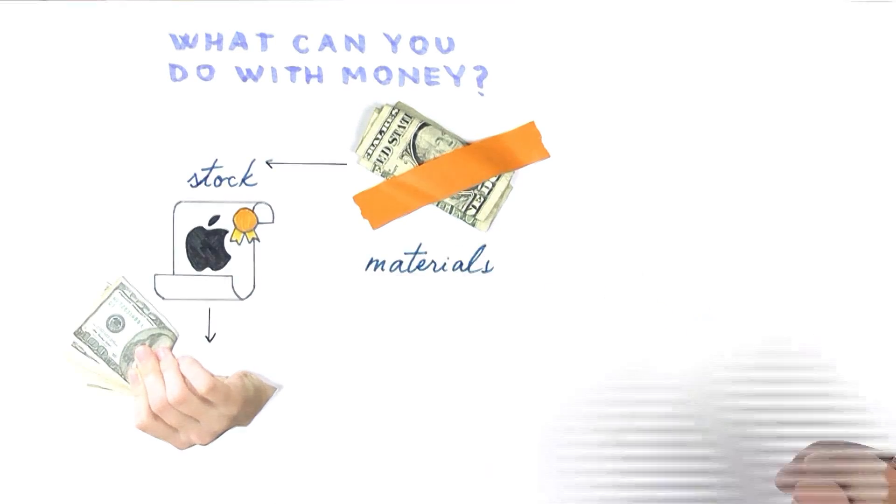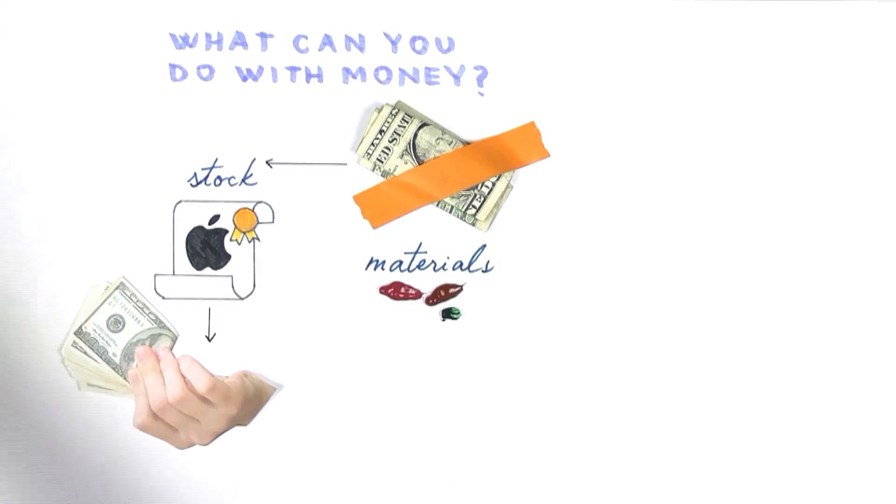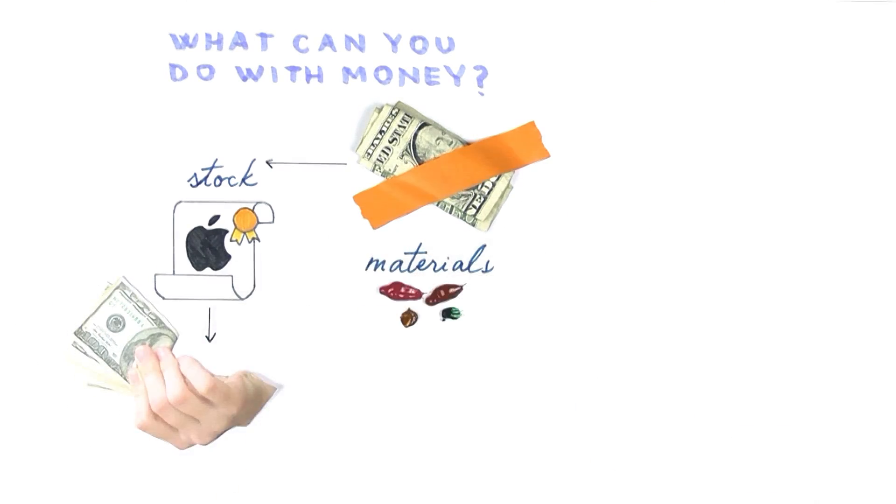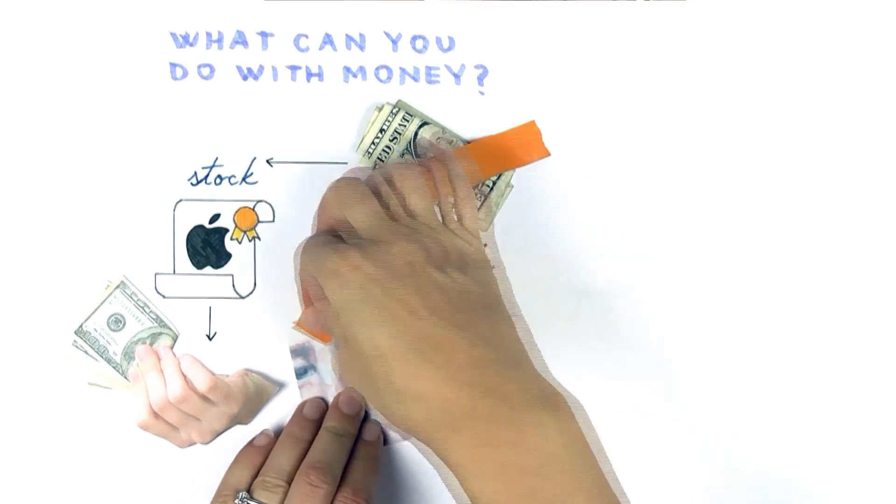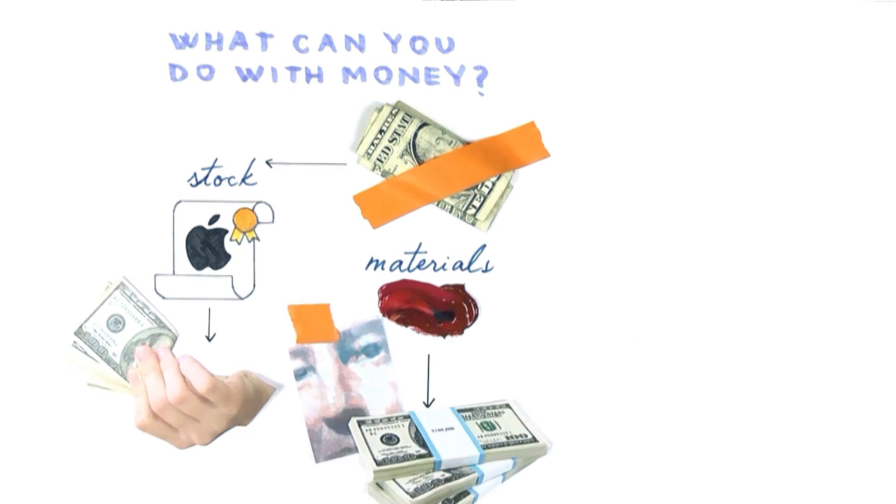You could also purchase raw materials that can be combined and transformed into something that could be sold for so much more than your original investment. Think about what Luke Toyman spends on paint and canvas versus the sale price of his paintings. That's quite a return.